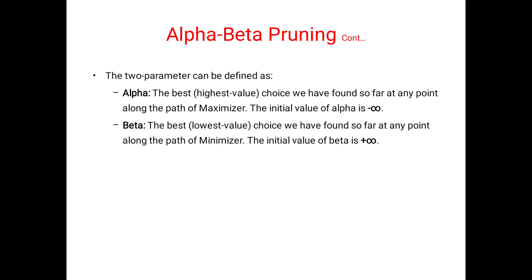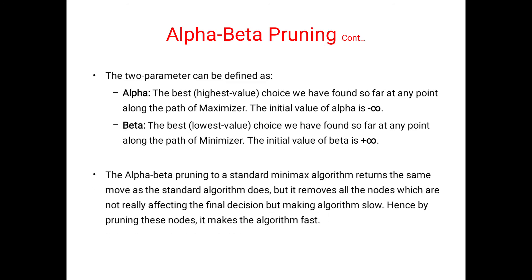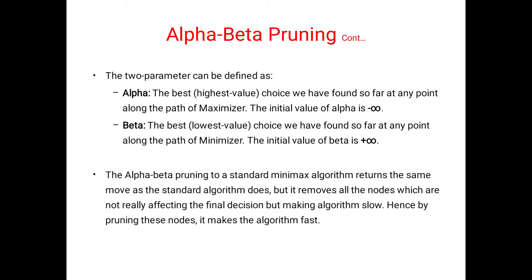Here we consider alpha and beta values similar to the minimax algorithm. Alpha is considered the highest value, so its initial value is minus infinity. Beta is considered the lowest value, so its initial value is plus infinity.